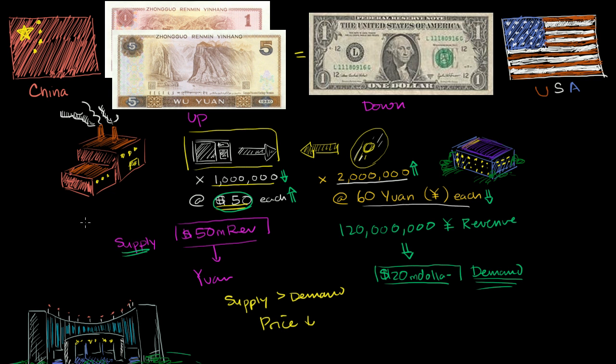For the sake of simplicity, let's assume that the current conversion rate is 6 Chinese yuan per one US dollar. And at that exchange rate, China is exporting $50 million worth of goods to the United States.